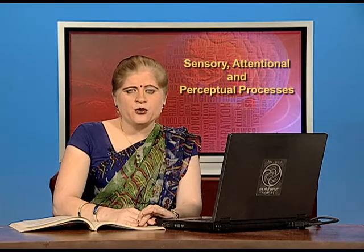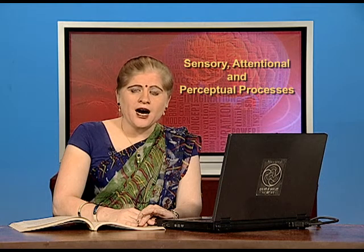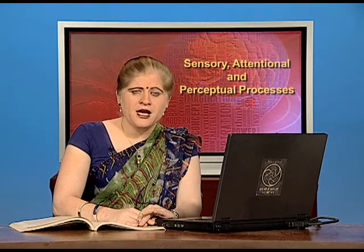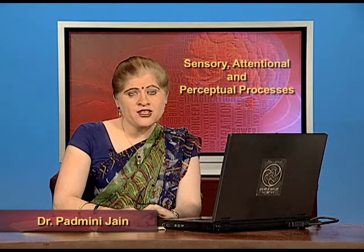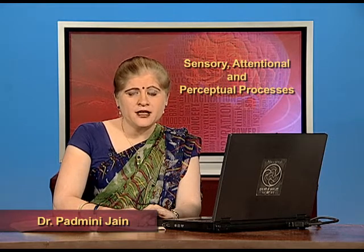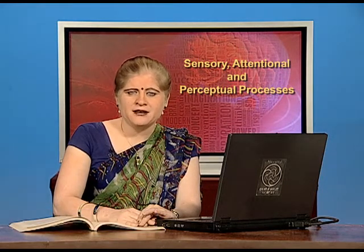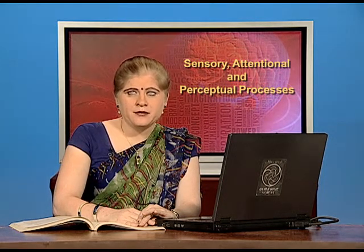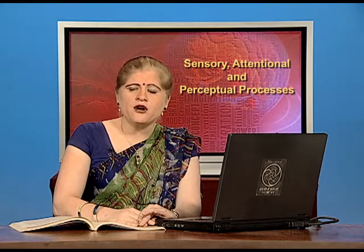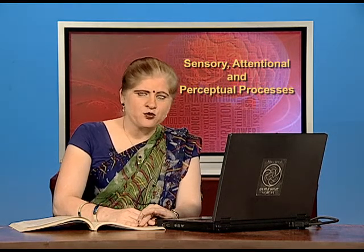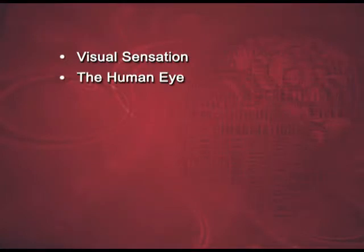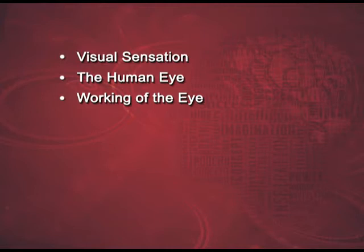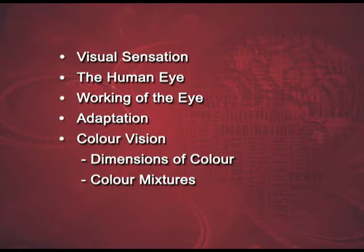In the previous part, we saw what are the different properties of stimuli that make us sense them and which are the different sense organs in the human body that help us make the receptors acceptable. In this part, we shall talk of two of these sense organs in detail. The first one being visual sensation — we will cover the human eye, its working, structure, and special processes like adaptation, color vision, and after images.